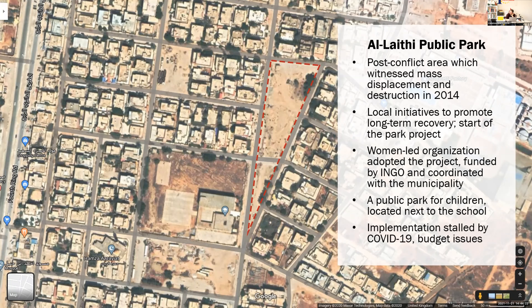One project was a proposal by a local organization to build a park — it came out of left field, because when people think of reconstruction they think of repairing homes and schools. But the organization said one of the things the area lacked even before the conflict was open public space where kids could play. They chose a site in front of a local public school — a strip of land — and proposed it to an international organization providing funding. What's unique is that it's a woman-led organization. In Libya, women are often restricted from political participation, so women and youth dominate the civil society space where their voices are loudest.